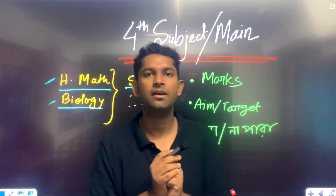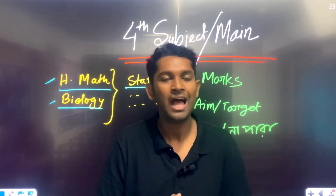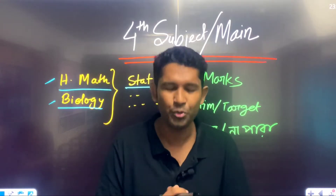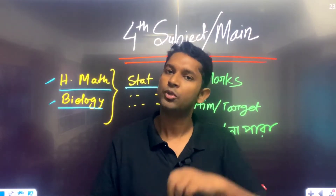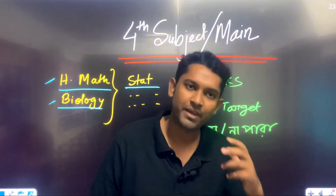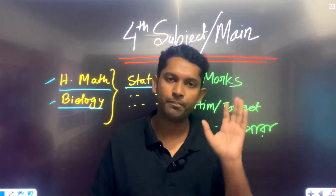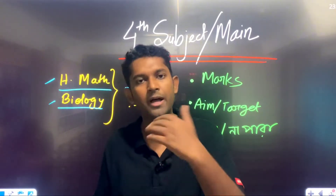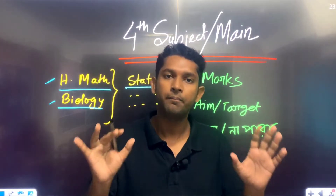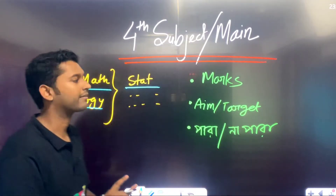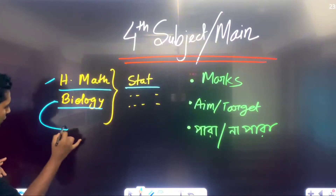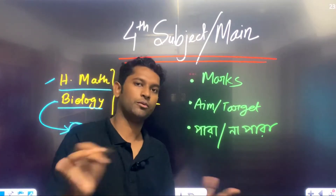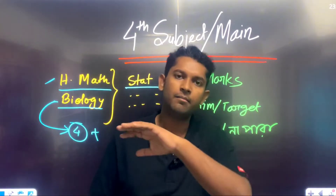What I want to tell you first is about biology and higher math as main subjects. The main subject in higher math also matters academically. If you have a CG of 4, which means you have a grade of 4, you have no problem.